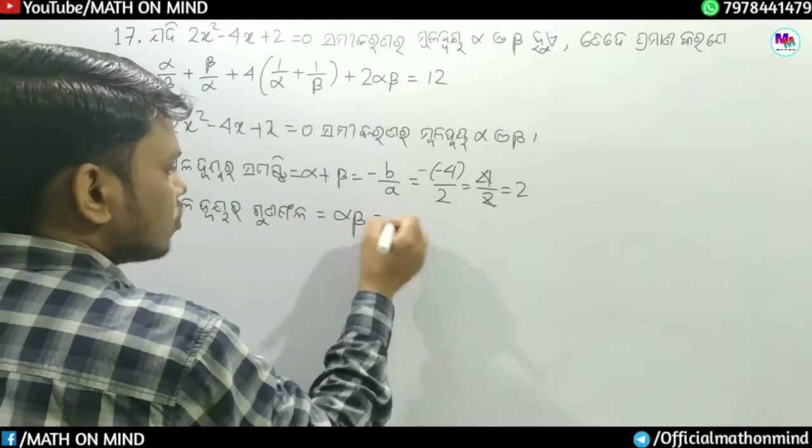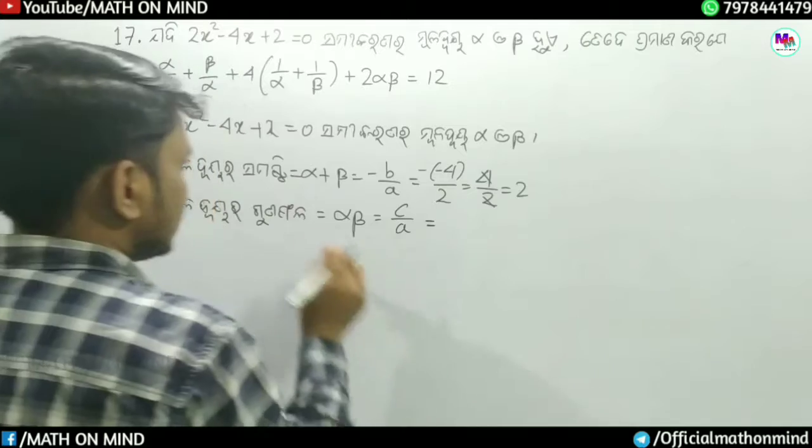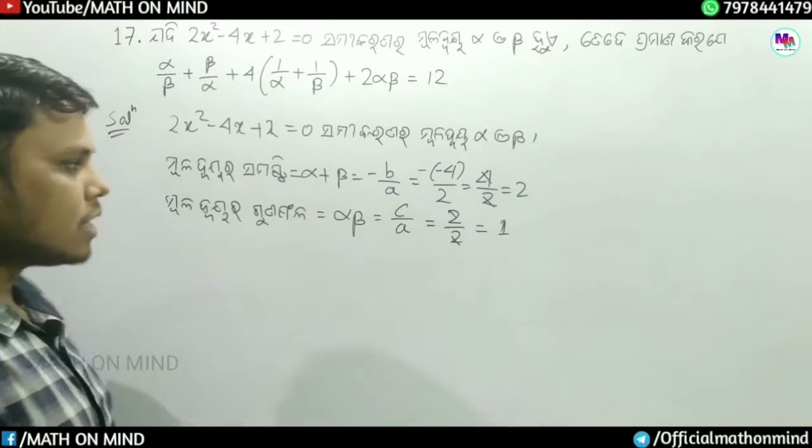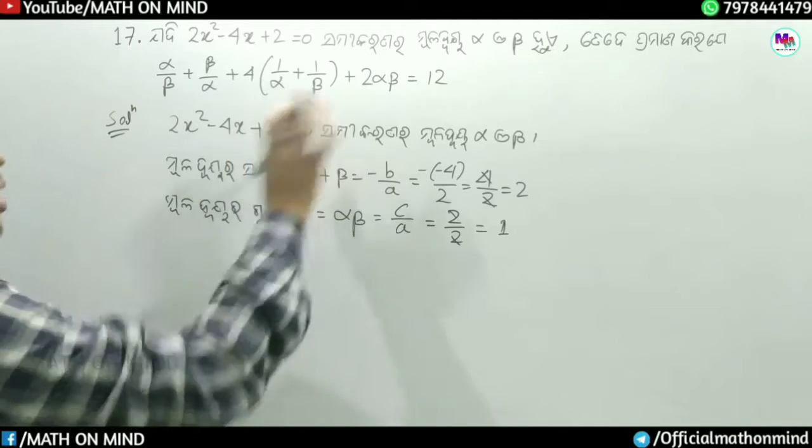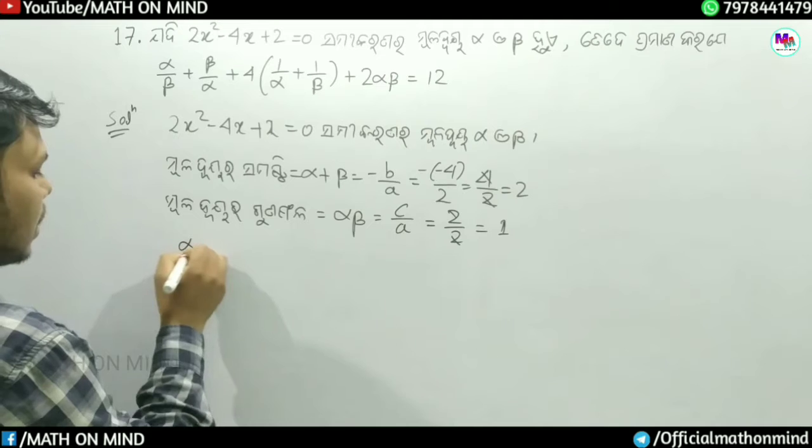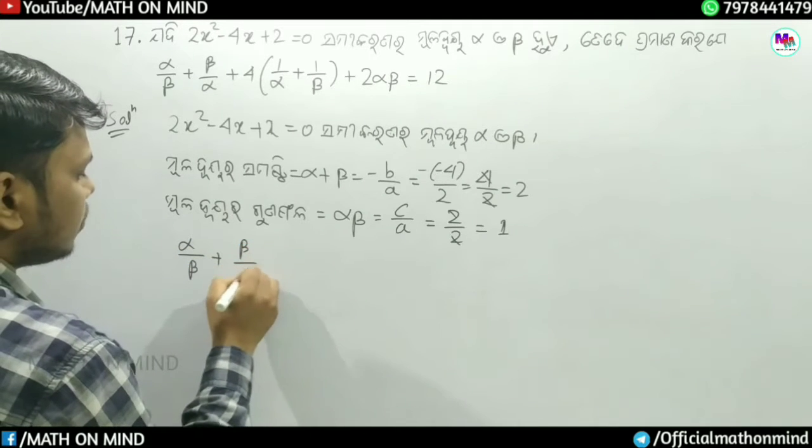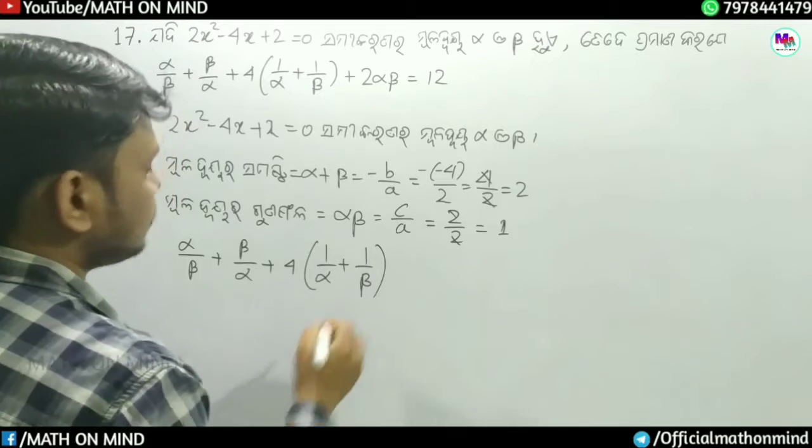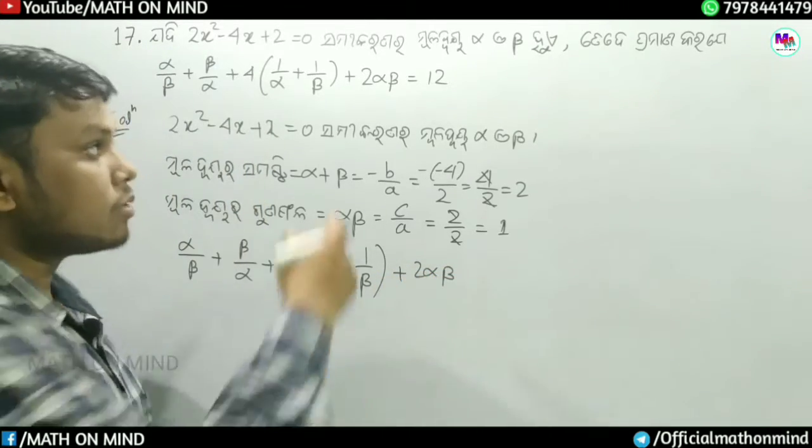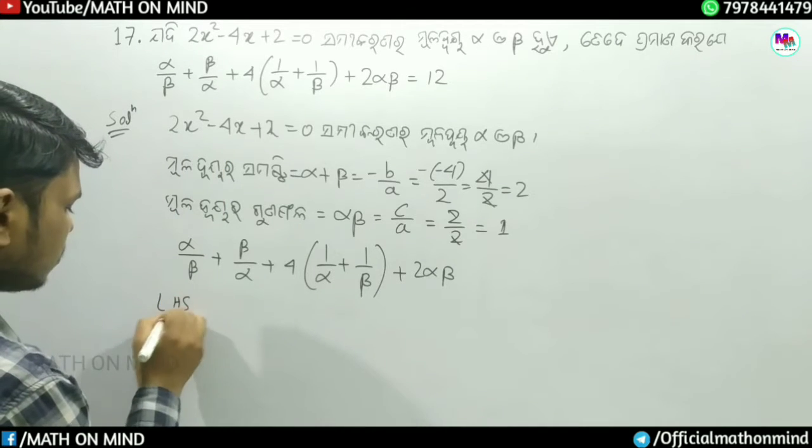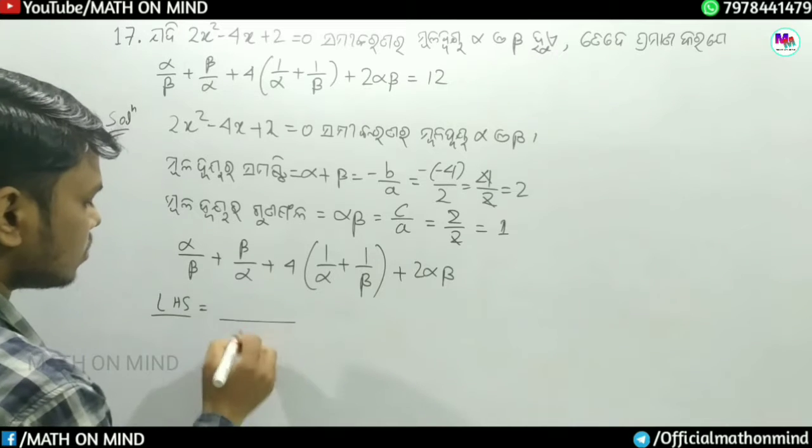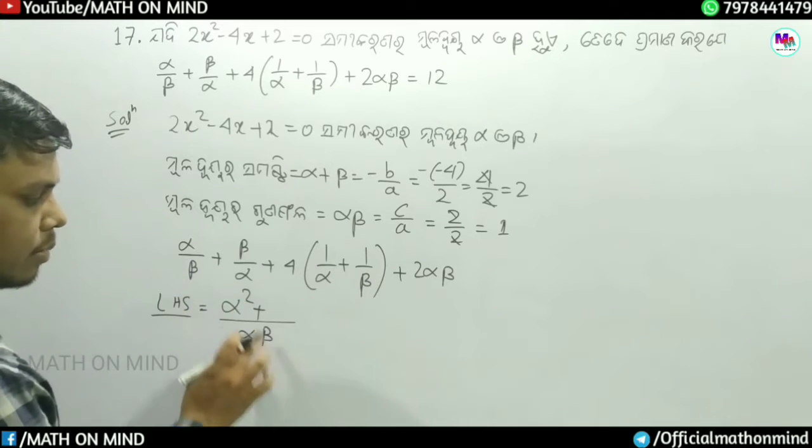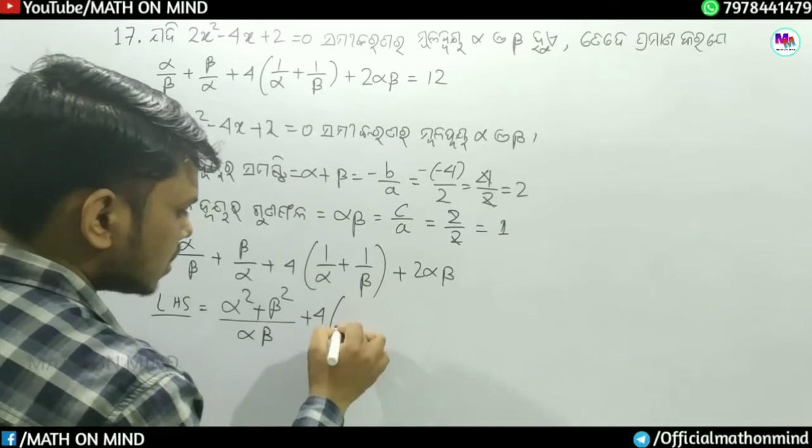Alpha plus beta equals minus B by A, which is minus of minus 4 divided by 2, which is 2. Alpha into beta equals C by A, which is 2 divided by 2, equals 1.